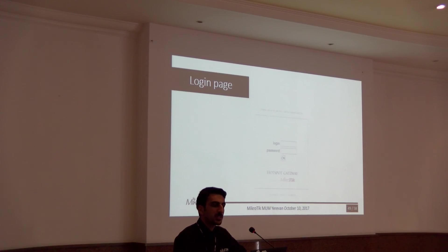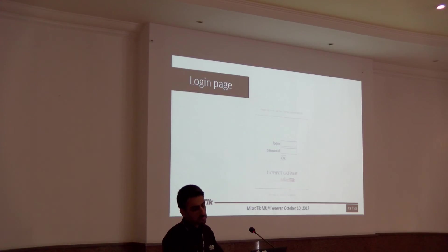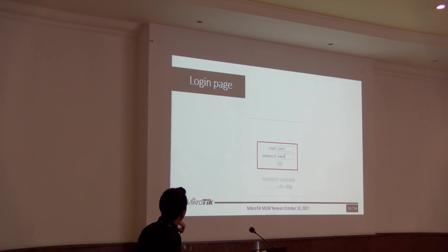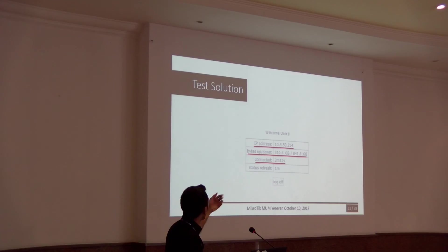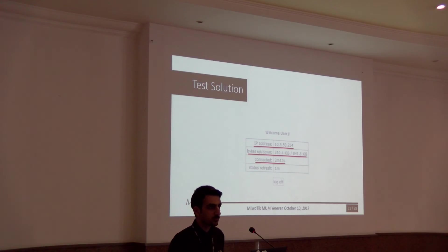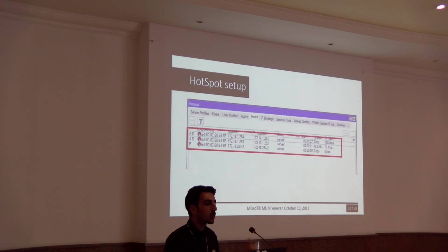Now all clients in the network, when they want to connect to the internet, will be faced with the Hotspot login page. After successful authentication — for example, user1 with password1, 2, 3, or 4 — the client can see a status page showing IP address, byte usage, connection time, and so on, and can then access the internet. You can also see all active clients in the Hotspot Active tab.